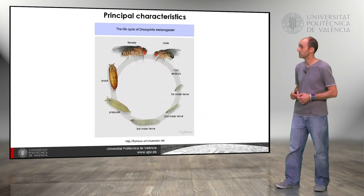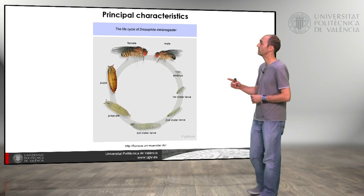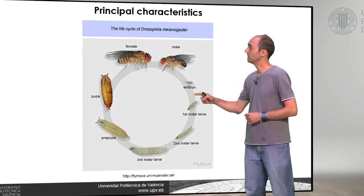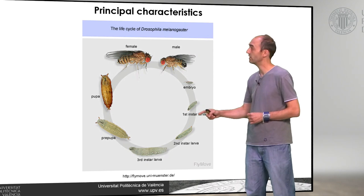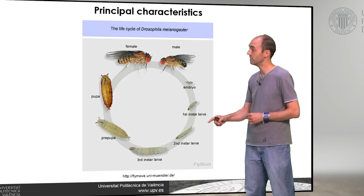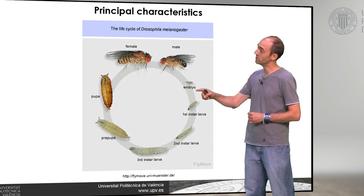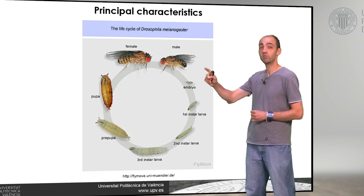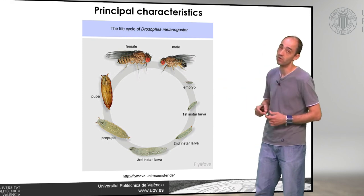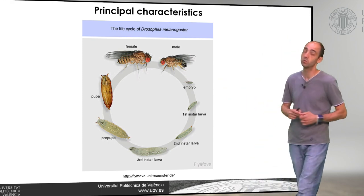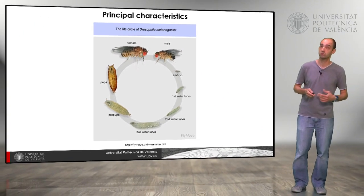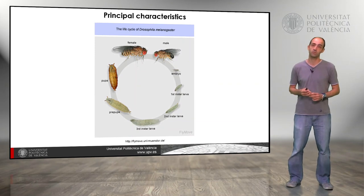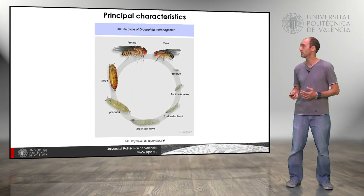The life cycle is complex. We have the adult flies; the females lay eggs, from the eggs a larva appears, and that larva passes through three different instars. When the larva is completely grown it forms the pupa, where the metamorphosis occurs. Adult flies arise from the pupa, and at 8–12 hours after emerging the female is already fertile, so we can start the cycle again.